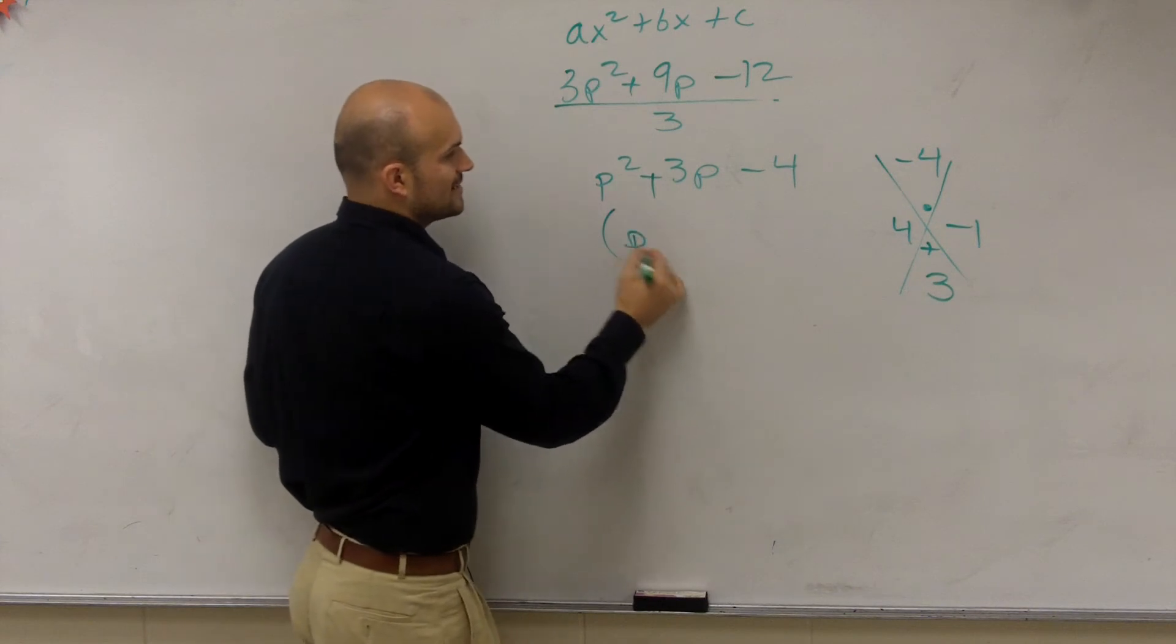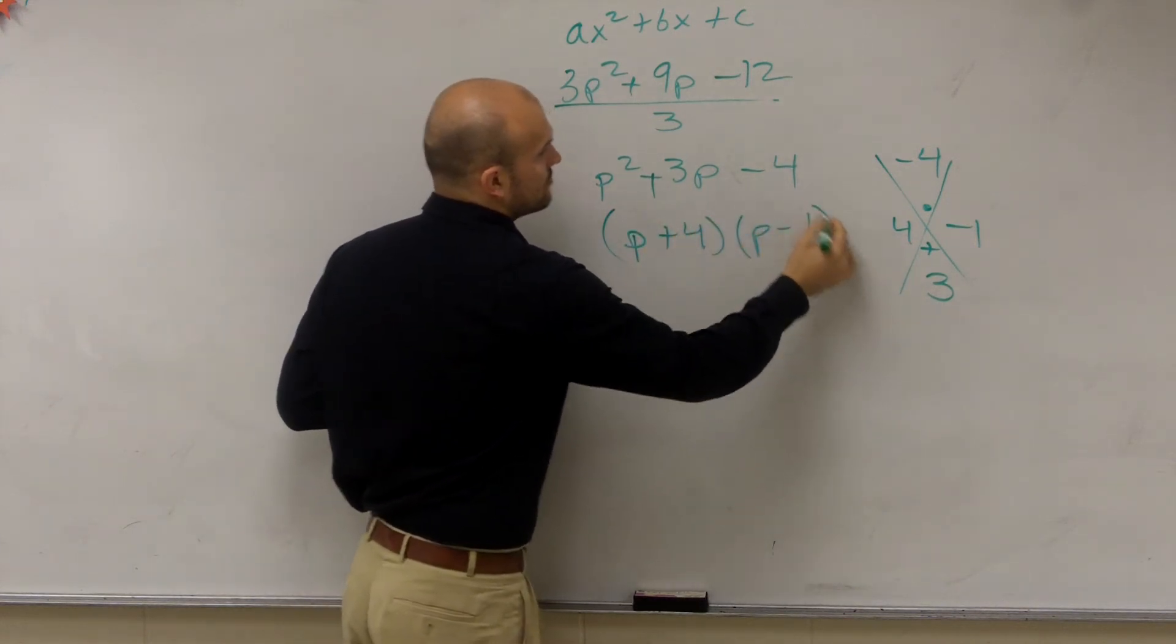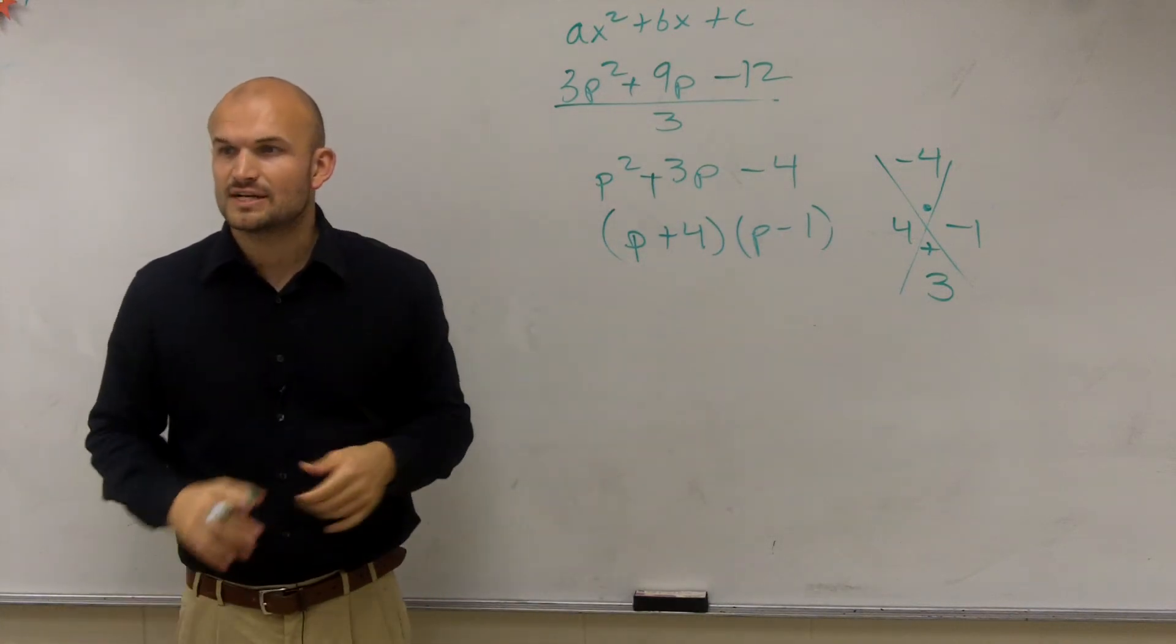Right? So therefore my factors are p plus 4 times p minus 1. Right? And that's how to factor.